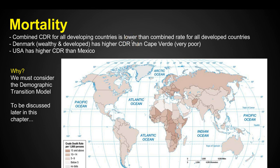You might think developed countries would have a lower death rate, and that's true to a certain extent. But what happens is people start to live longer in developing countries, so they're not dying as fast compared to developed countries, which have an aging older population and higher overall population.